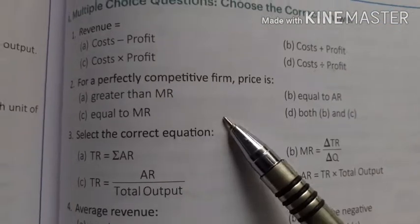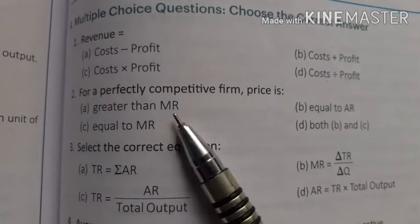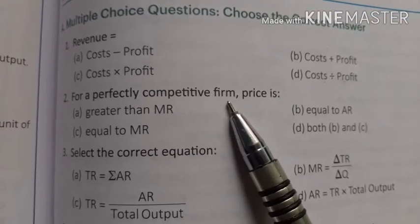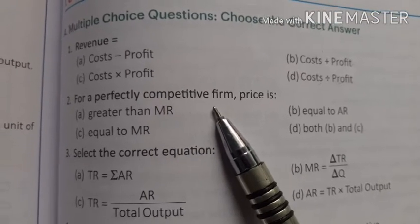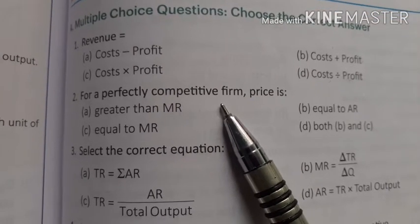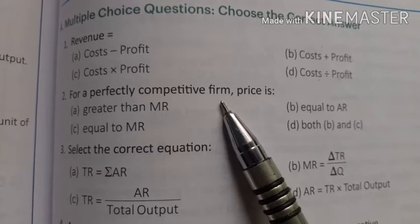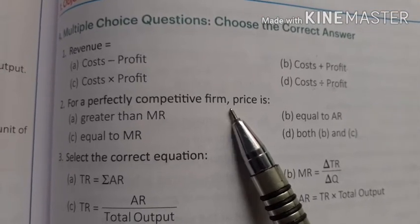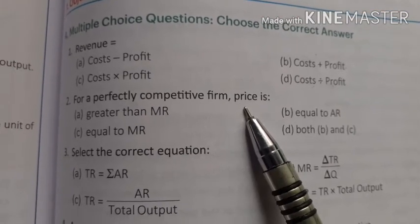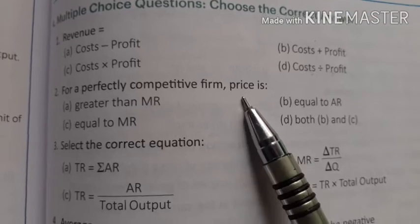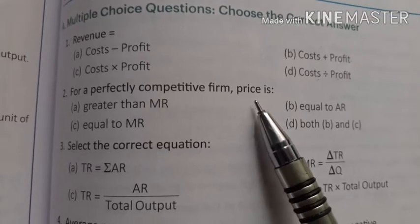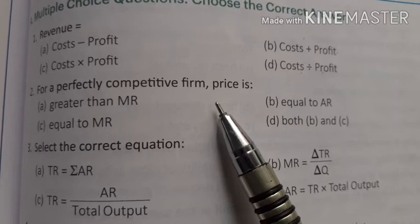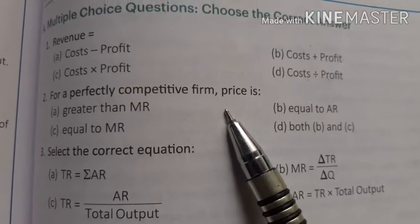Second question: for a perfectly competitive firm. A perfectly competitive firm is one in which there are a large number of sellers and buyers, and price is decided by the industry.